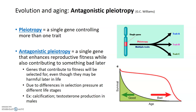This is supported by the idea that there are different selection pressures at different stages of life, with a higher force of natural selection early — pre-reproduction. Then once reproduction happens, the forces of natural selection decrease over time. So genes that contribute to fitness are selected for during that time of high selection pressure, and as selection pressure decreases, those harmful phenotypes are not really selected against.